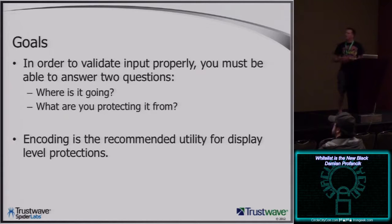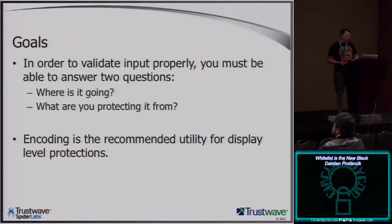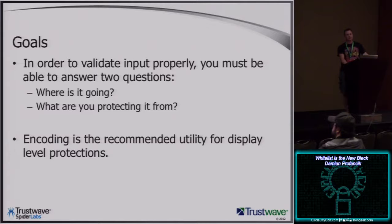It's every input you could possibly get into your application that needs to be checked. You need to be asking yourself: where is the data going? What am I going to use it for? And what am I protecting from? This is your threat modeling — what's your attack surface and what's it going to be used for? Encoding should be used for display-level protection, like cross-site scripting, on top of input validation.